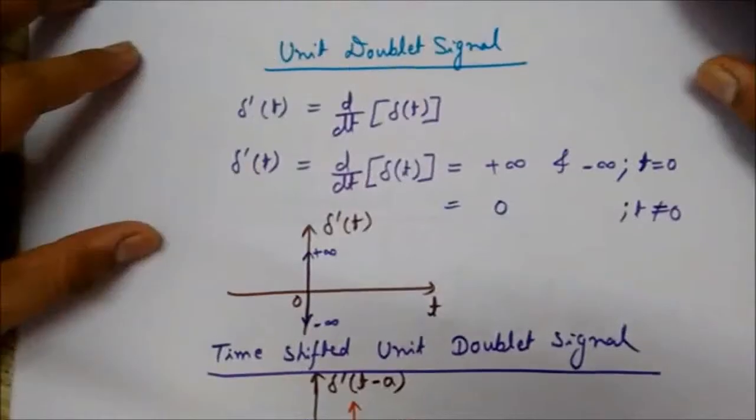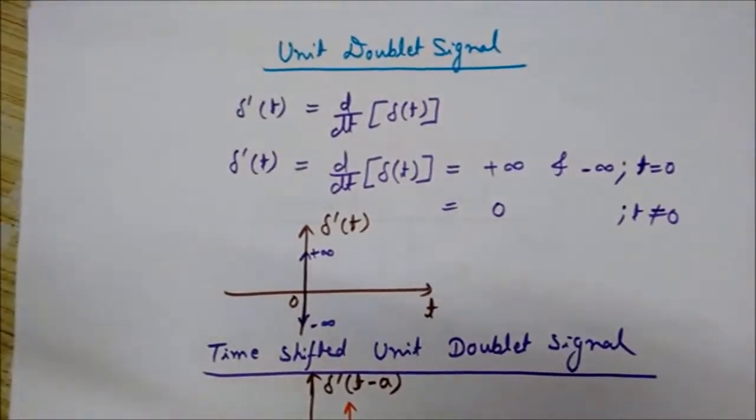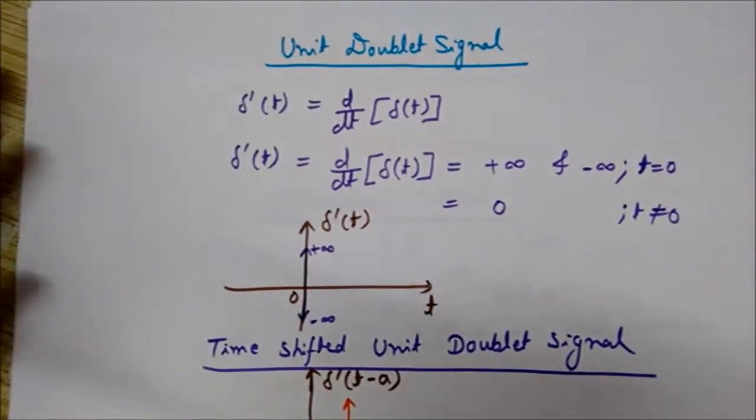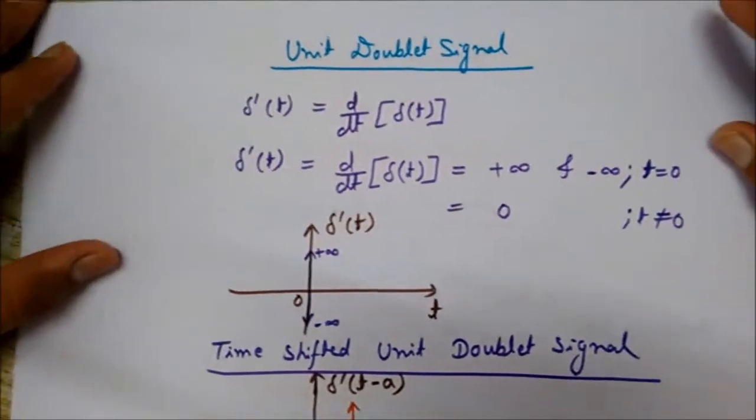Now we will see a type of standard signal called the unit doublet signal. Let's start with the mathematical interpretation of how to define it.